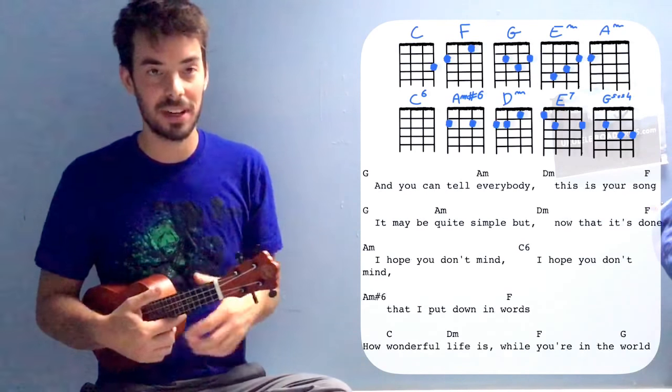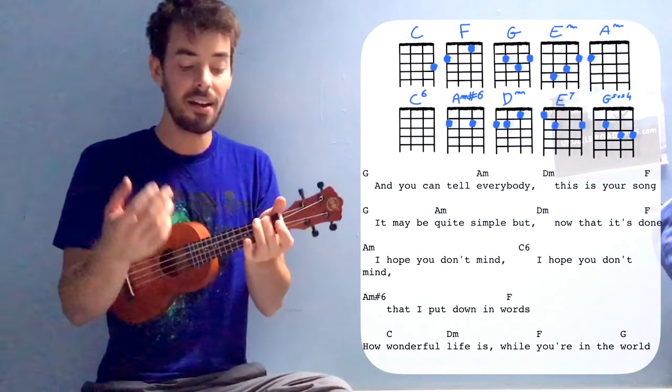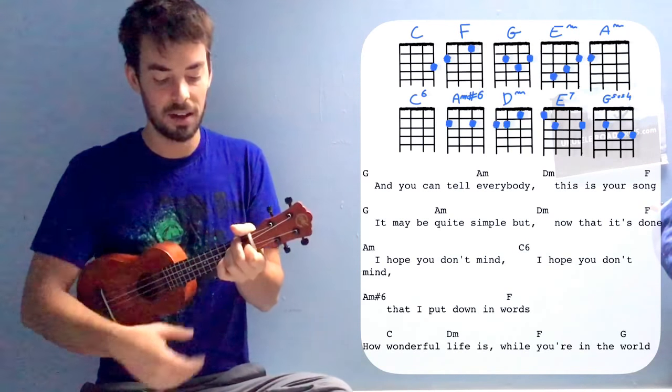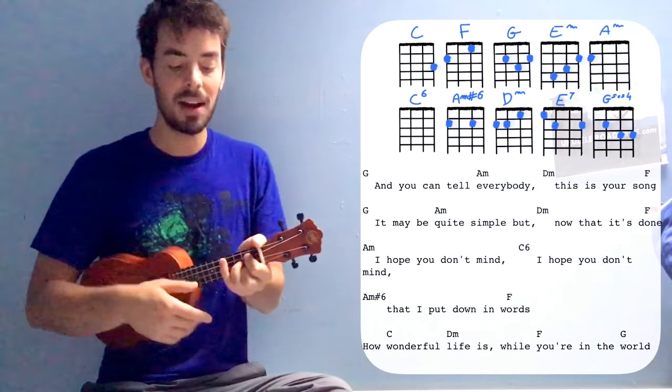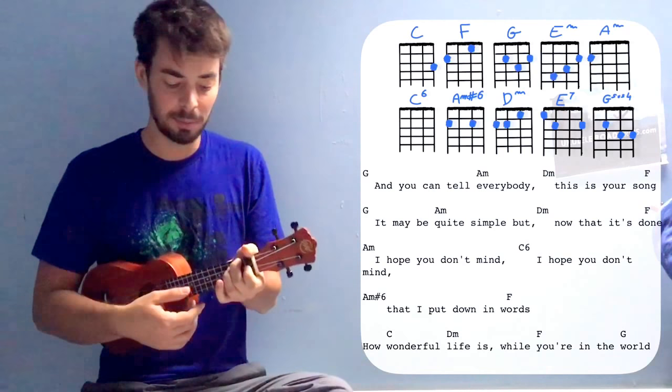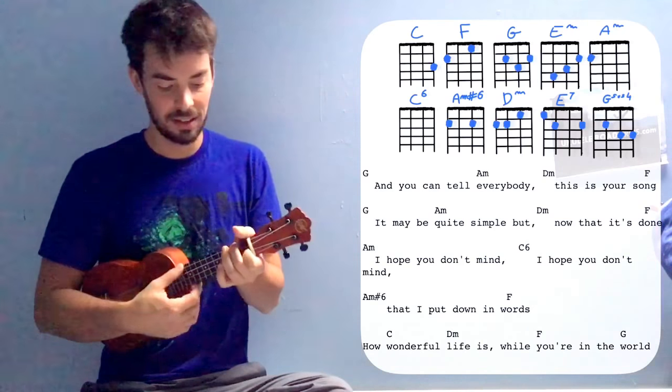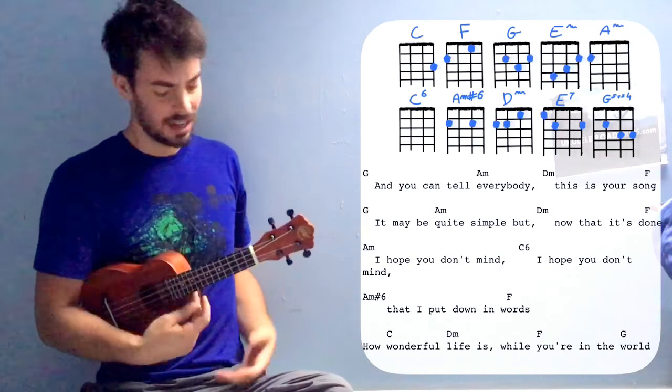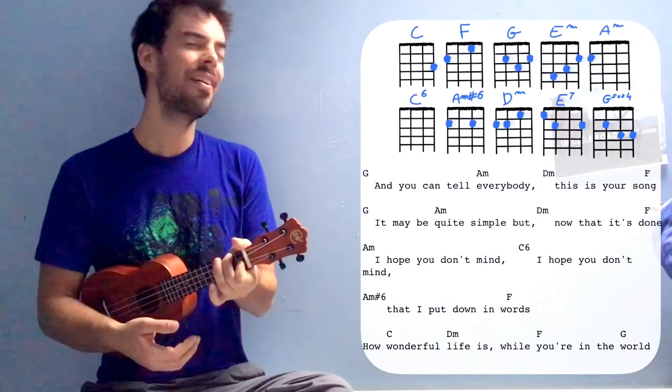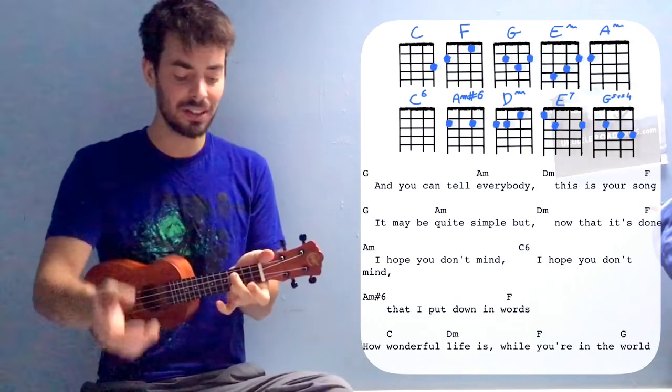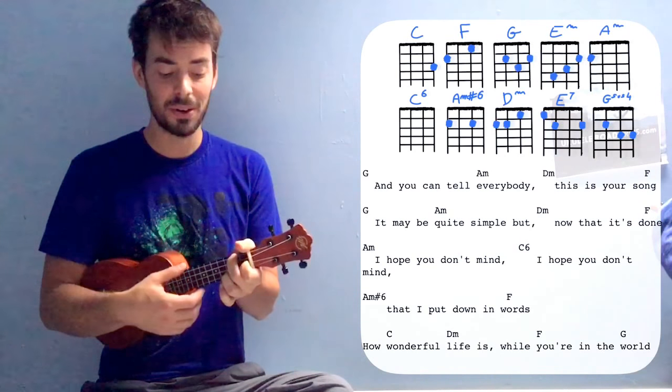Now chorus, get a G ready. G. And you can tell A minor on everybody. Everybody. D minor. This is your F song. G. It may be quite simple, but... D minor. Now that it's an F on. Done. I hope you don't mind. I hope you don't mind. That I put down in words. How wonderful life is while you're in the world.